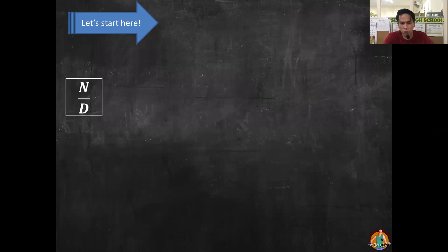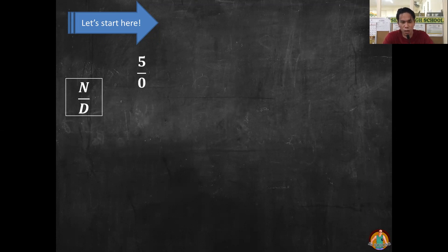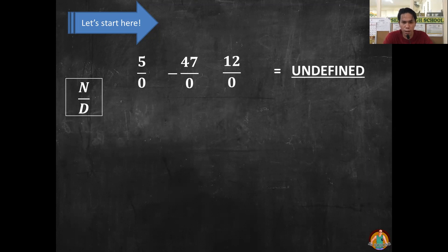In a fraction — the numerator and denominator — we cannot have a denominator equal to zero, because our answer will be undefined. So let's say, for example, 5 over 0, negative 47 over 0, and 12 over 0 will give us the answer undefined. Again, we cannot have the denominator equal to zero.